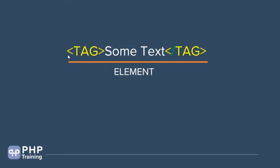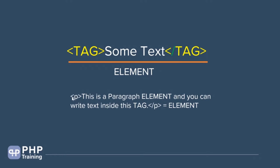The whole thing from the starting tag to the ending tag, including the content, is called an element. An example is the paragraph tag — less-than p, greater-than, then text, then less-than slash p, greater-than. Everything including the opening tag, closing tag, and text is the element. You can switch between calling it a tag or an element — element is the complete thing, while tag refers just to the opening or closing tag.